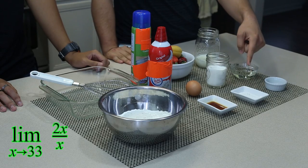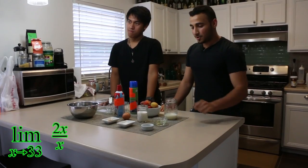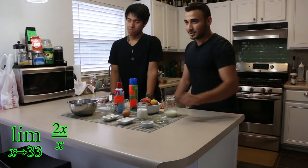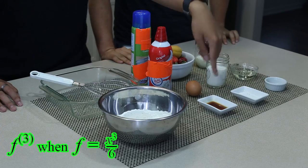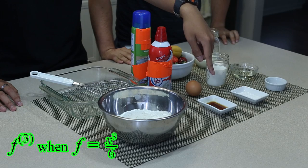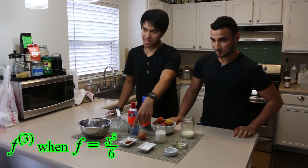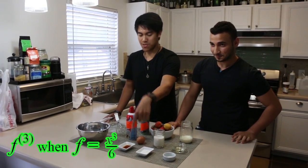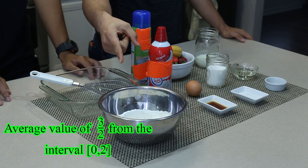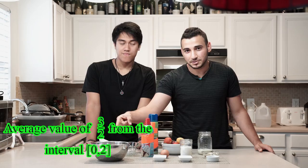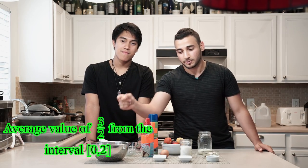The limit as x approaches 33 of 2x over x teaspoons of baking powder. The third derivative of 1 over 6 x cubed teaspoons of vanilla extract. The average value of 3 over 2 from 0 to 2 cups of all-purpose flour.